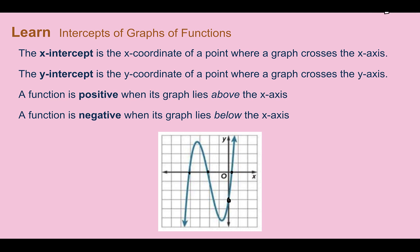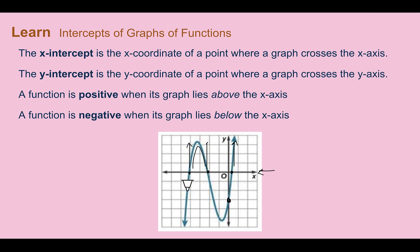A function is positive when its graph lies above the x-axis. The hill shape is where it's positive, and the arrow going up is positive because those parts are above the x-axis. Negative is when it's below the x-axis. There are two areas where it's negative: the part going down and the valley area below the x-axis.